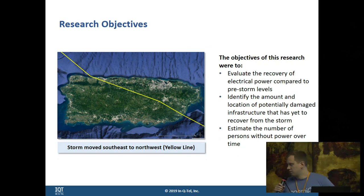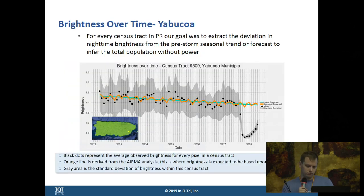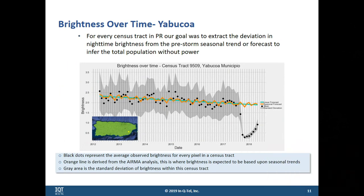Just to visualize where the storm came from: it came from the southeasterly direction and moved to the northwest directly across the island. To estimate the number of persons without power over time, we needed a standard unit — in this case, we used census tracts. If you're not familiar with U.S. census, it divides areas up into regions of interest. In Puerto Rico there are over 900 census tracts, and each census tract has on average about 4,000 persons in it.